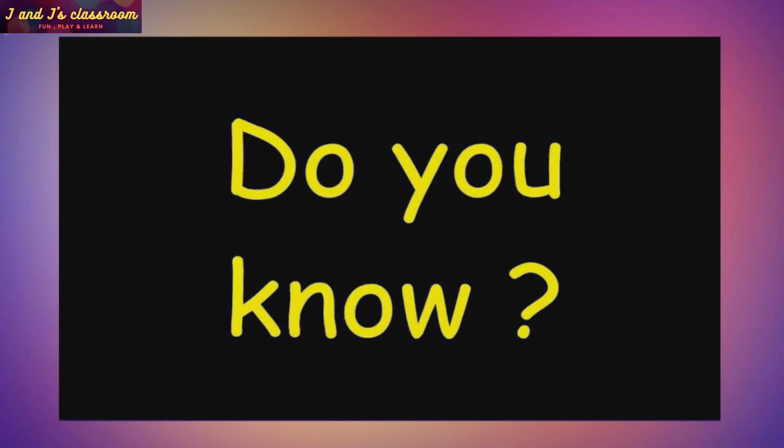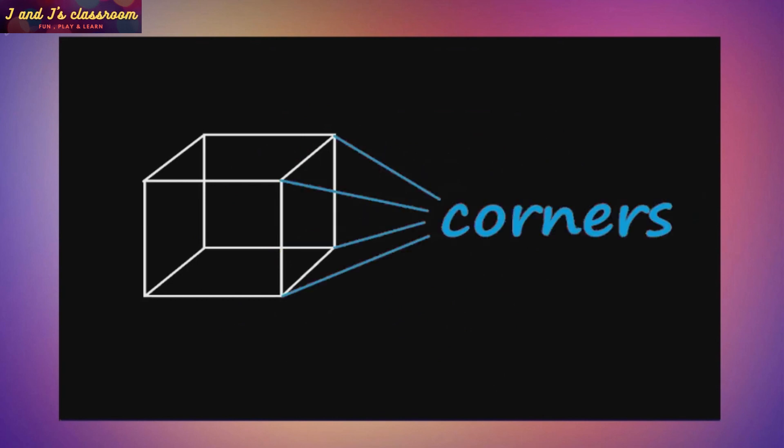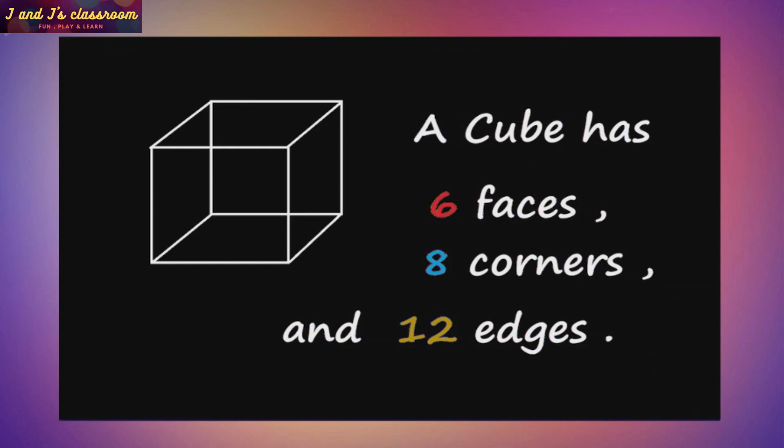Do you know? These are the flat faces of cube. And these are the corners. These straight lines of the cubes are called straight edges. So a cube has 6 faces, 8 corners and 12 edges.